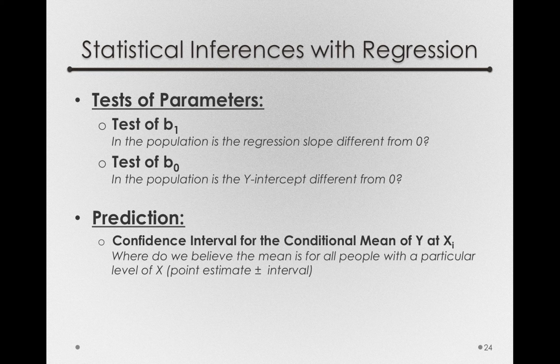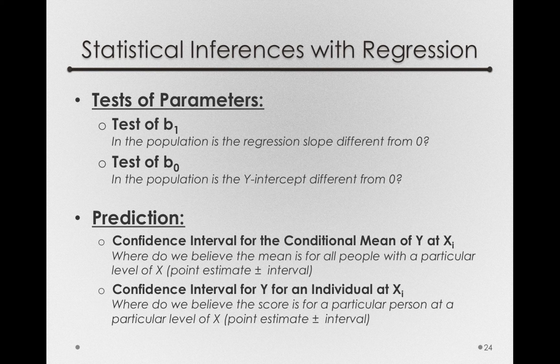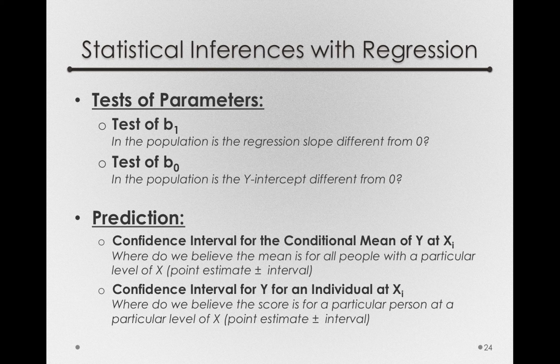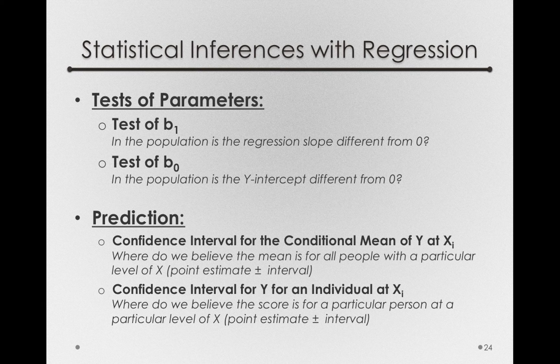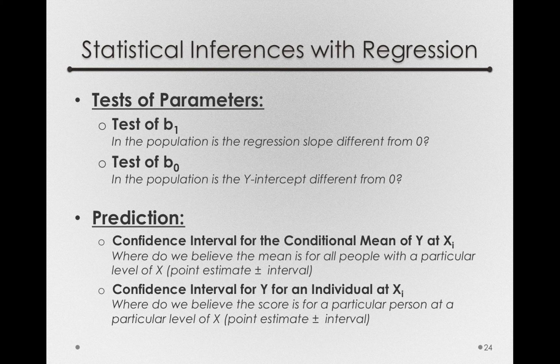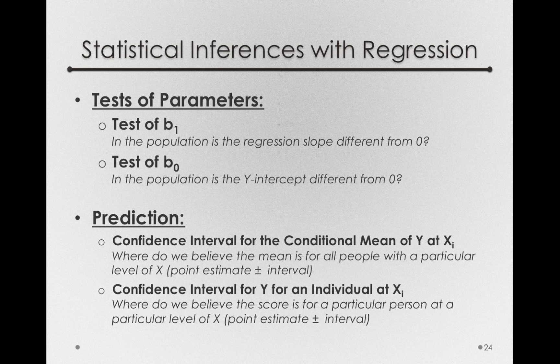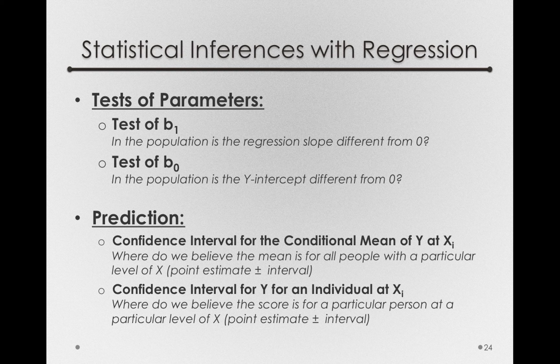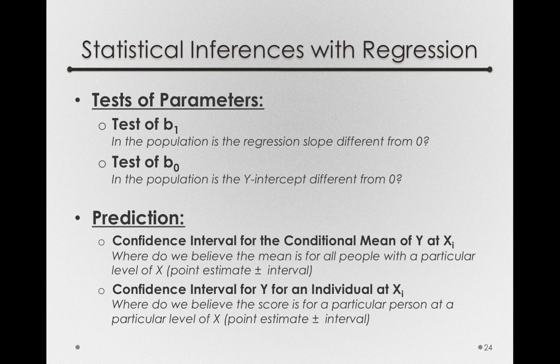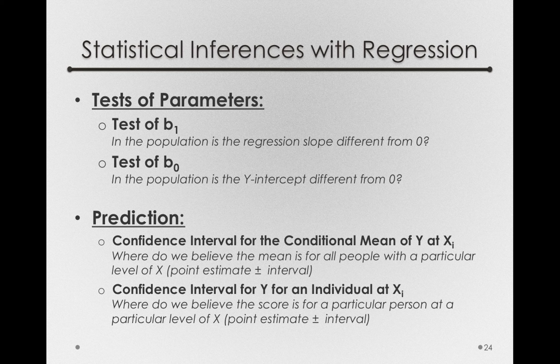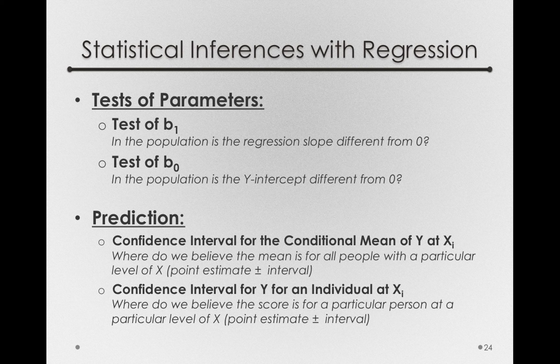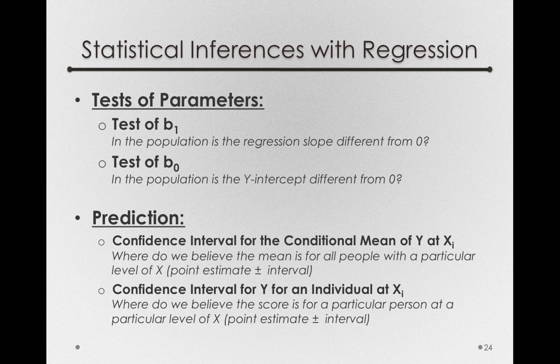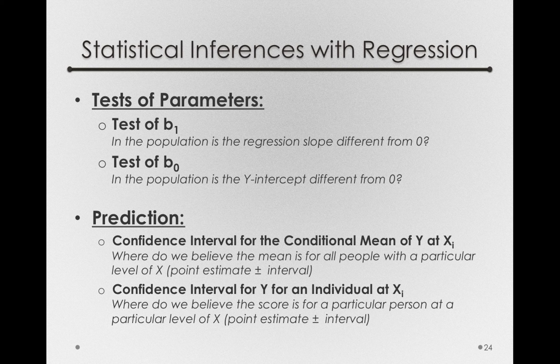Now there's another type of prediction that is sometimes used. And this is a confidence interval for y for an individual at a particular xi. So this is, where do we believe the score is for a particular person at a particular level of x? So again, a point estimate plus an interval. This is a slightly different confidence interval, because in the first confidence interval, the one for the conditional mean of y, we're talking about an interval for predicting where the mean is of all people. The second confidence interval is really an interval for where we think individual scores are lying.